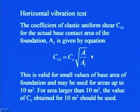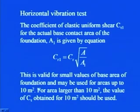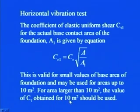The coefficient C_tau₁ for the actual base contact area A₁ of the foundation is given by C_tau₁ = C_tau × √(A/A₁). This correction is valid for small values of base area and may be used for areas up to 10 m². For areas larger than 10 m², the value of C_tau obtained for area equal to 10 m² should be used — the same area restriction as in the vertical vibration test.